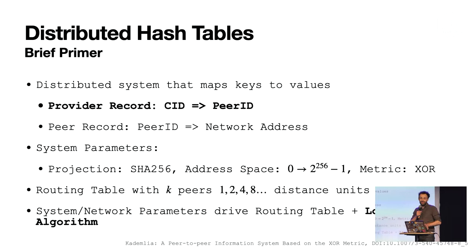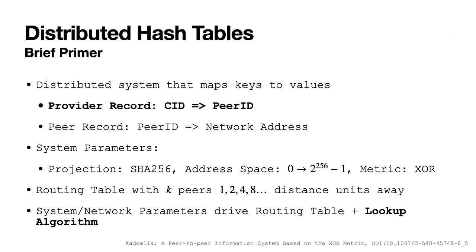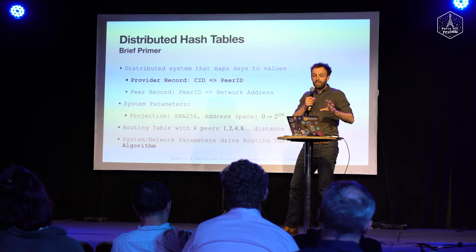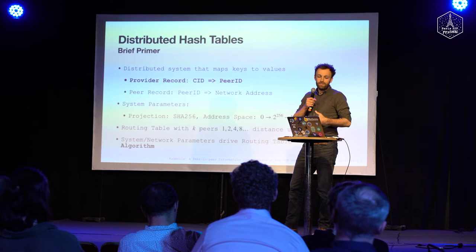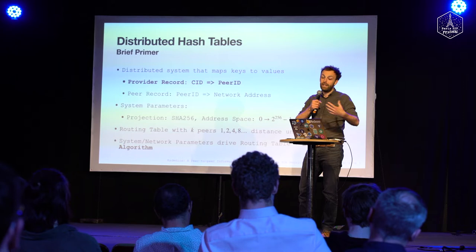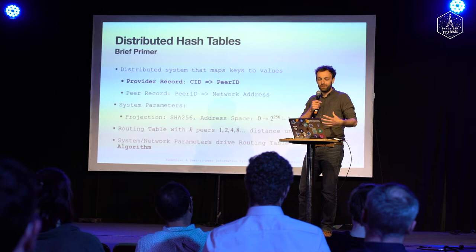I probably won't do justice on this topic but I'll give my best. For anyone curious, I highly recommend the paper — it's a very approachable read. A distributed hash table is basically a distributed system that maps keys to values. In the case of IPFS, it does two relevant things: it maps CIDs to peer IDs in what we call provider records, and it maps peer IDs to network addresses. Looking up content in IPFS is actually a two-step process.